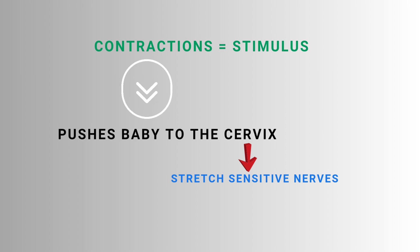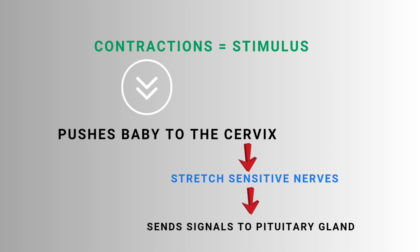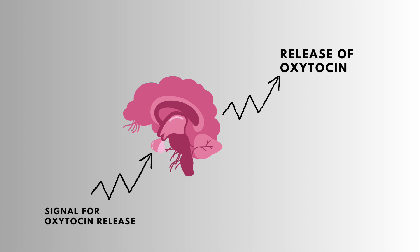These stretch-sensitive nerve cells monitor the changes and act as sensors. These sensor cells signal the release of oxytocin. This oxytocin acts as an effector and helps produce stronger contractions.